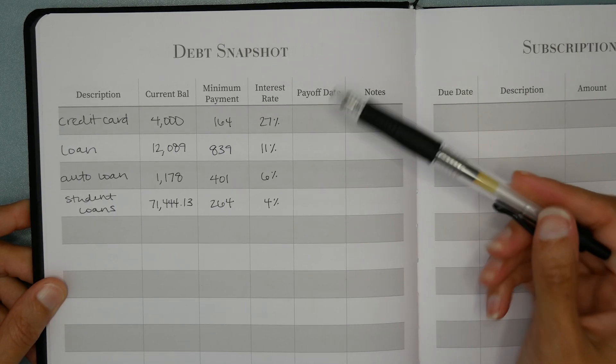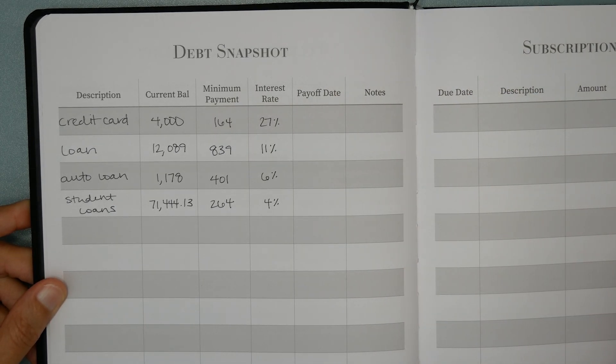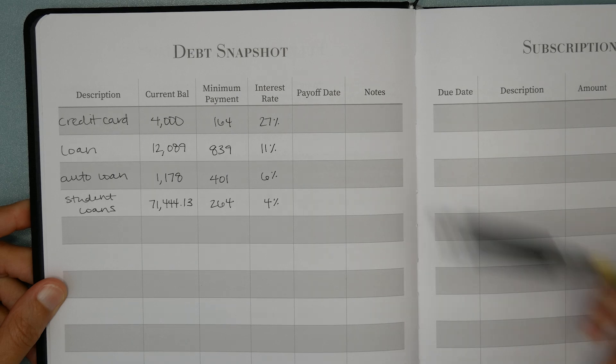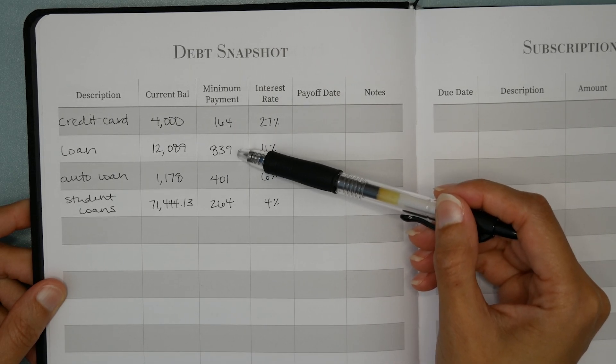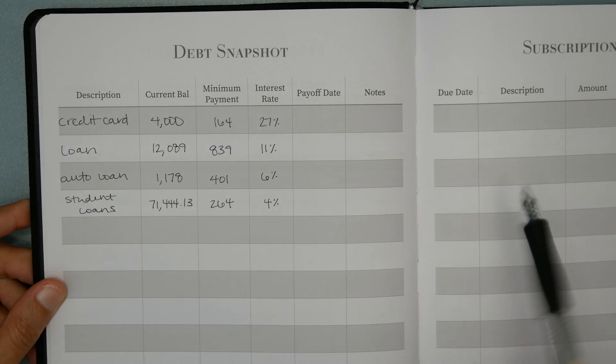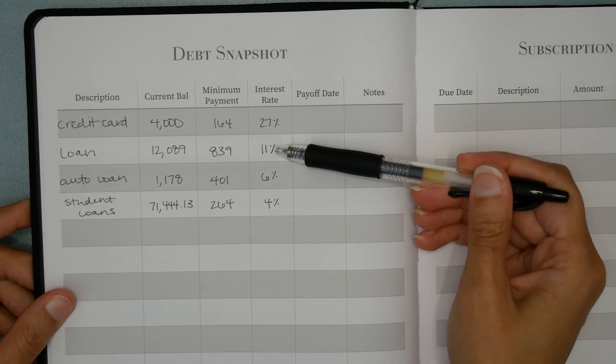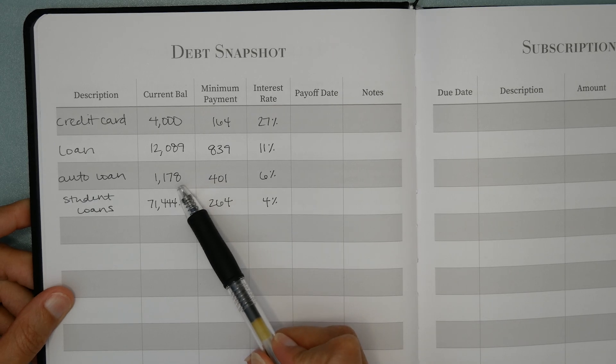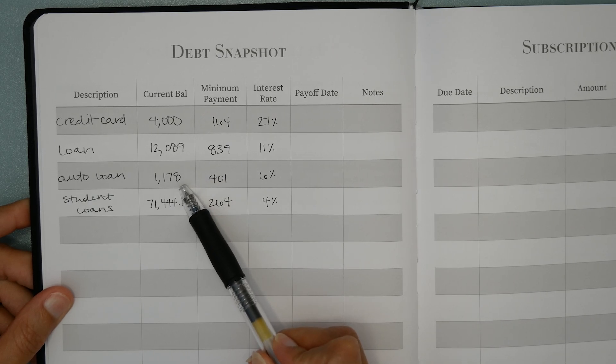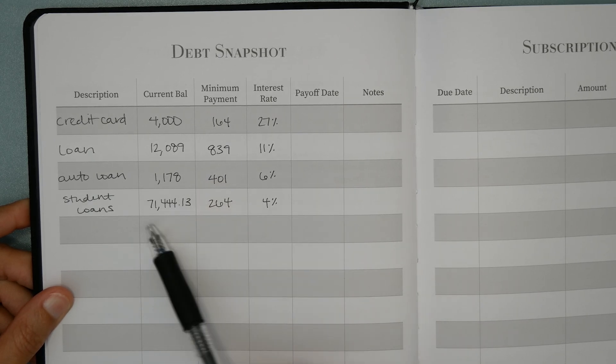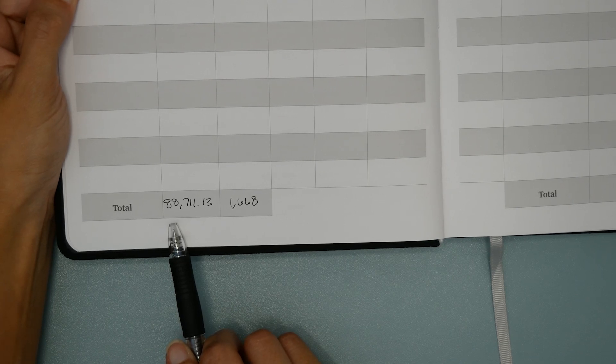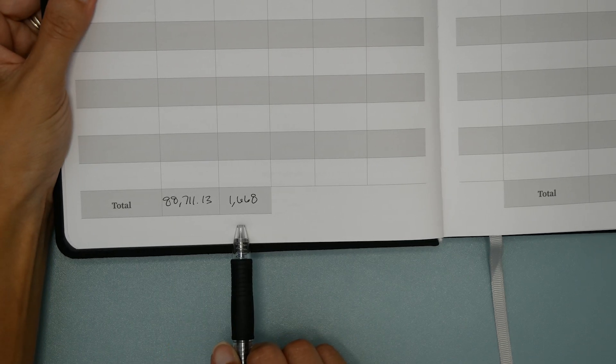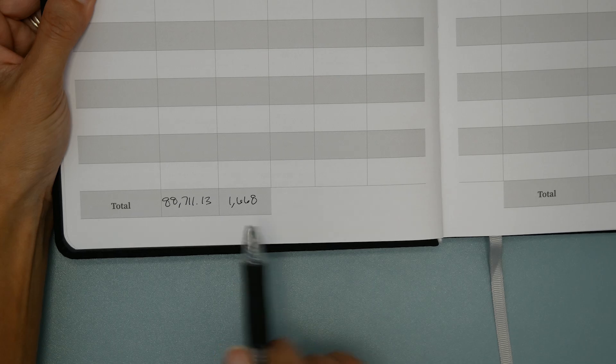Here is a snapshot of her debts. We have about $4,000 in credit card debt. We've got a personal loan that has a pretty steep monthly minimum payment with an 11% interest rate, which I would consider high interest. The car loan is actually almost gone with just a few payments left, and then a good bit of student loans with interest rates that range from 3% to 6%. In total, we're looking at about $89,000 in debt, and she's paying $1,668 per month in minimum payments.